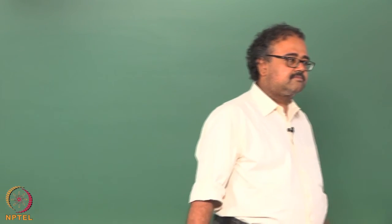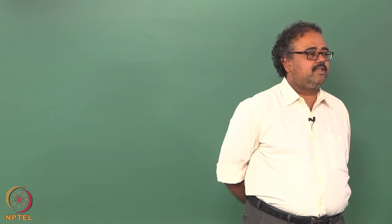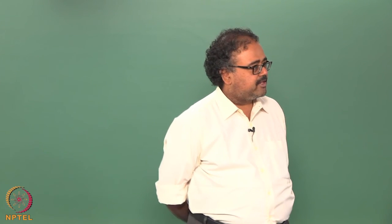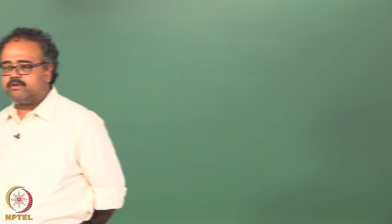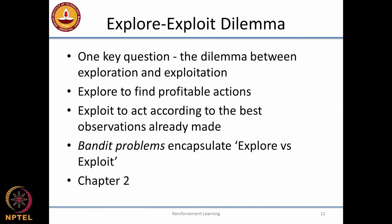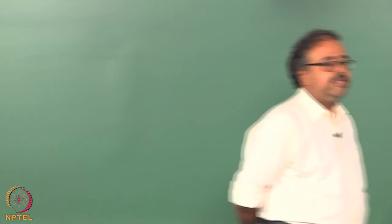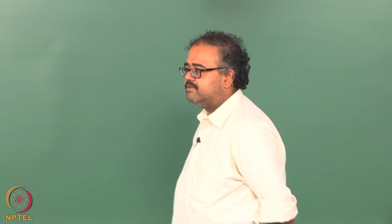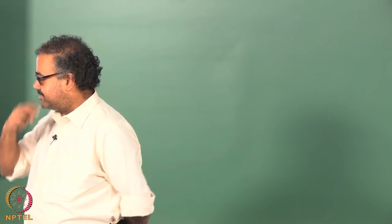A student asks how you know when to stop exploring and just exploit the best known action — that is exactly the explore-exploit dilemma, one of the crucial questions in RL. Different algorithms handle it differently. A simpler version of RL called bandit problems specifically encapsulates this dilemma, ignoring delayed rewards and sequential decisions to isolate the core explore-exploit question.